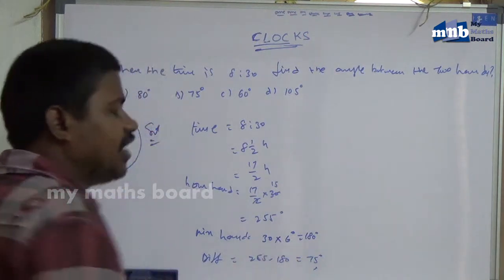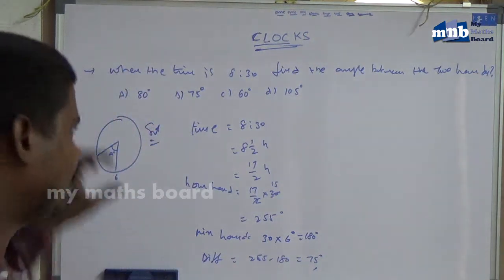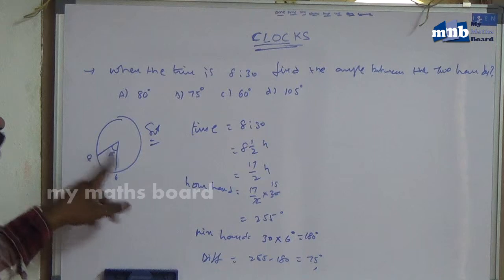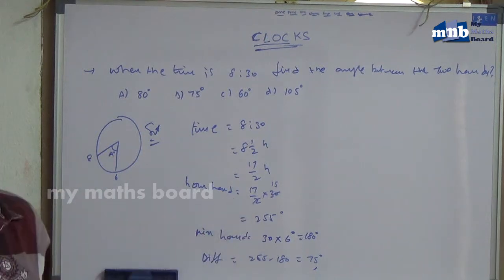The difference between the hour hand and minute hand is 255 minus 180, which equals 75 degrees. When the time is 8:30, the angle between the two hands is 75 degrees.